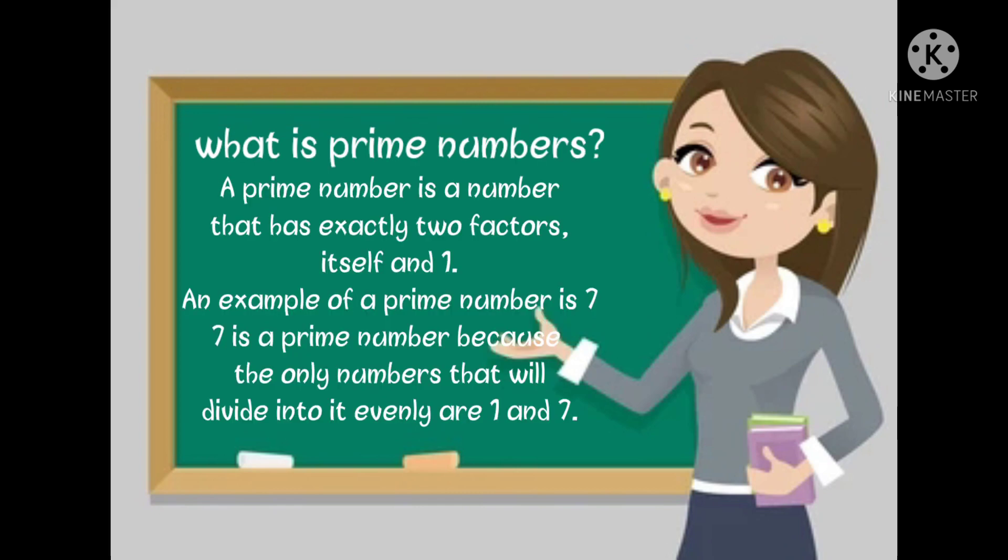What is prime numbers? A prime number is a number that has exactly two factors: itself and 1. An example of a prime number is 7. 7 is a prime number because the only numbers that will divide into it evenly are 1 and 7.